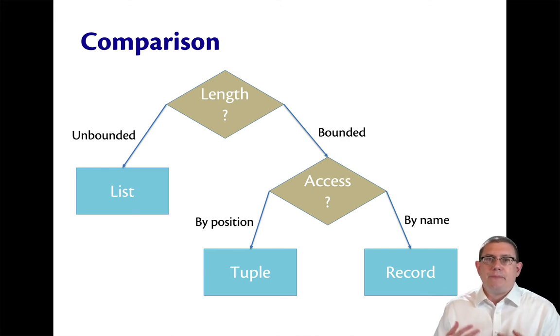So if you're representing something that has a bounded length to it, like our Camel example where there were only two numbers we needed to represent, you probably want either a tuple or a record.